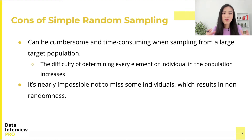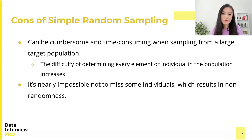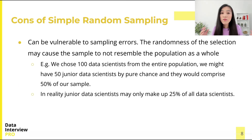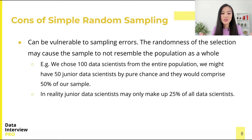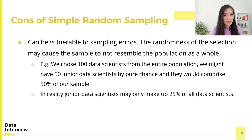Missing individuals results in non-randomness, as not all individuals have an equal probability of being selected. Simple random sampling can also be vulnerable to sampling errors. Specifically, the randomness of the selection may cause the sample to not resemble the population as a whole — basically, we may end up with a sample that is not representative of the population.